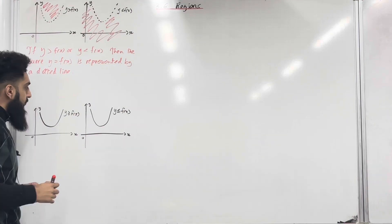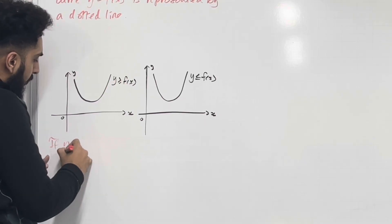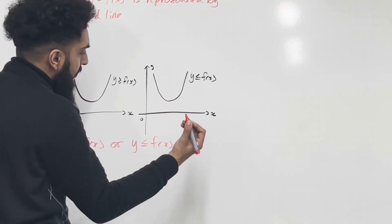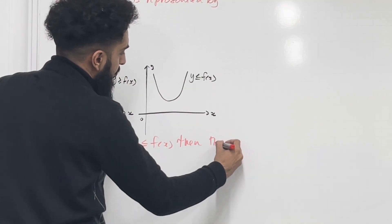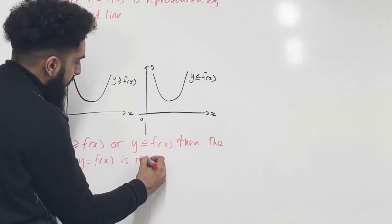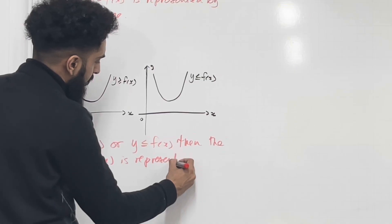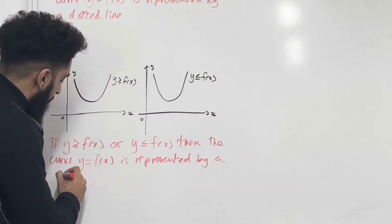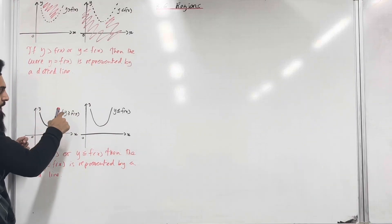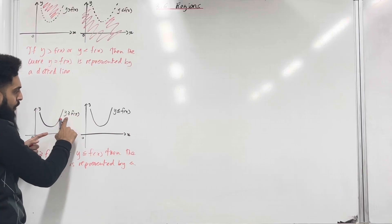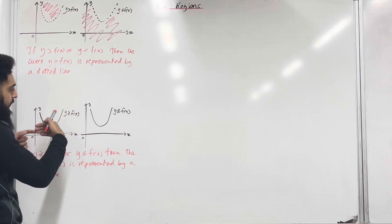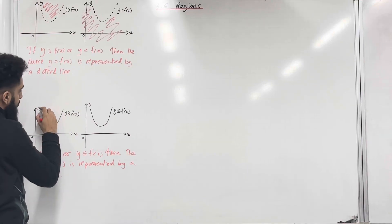Let's have a look at another mathematical statement. If y is greater than or equal to f of x or y is less than or equal to f of x, then the curve y equal f of x is represented by a solid line. So over here I want to shade in y is greater than or equal to f of x. Because the equal is included, the curve is represented by a solid line, and since we have greater than f of x, we need to shade in above the curve — so all of this part over here.